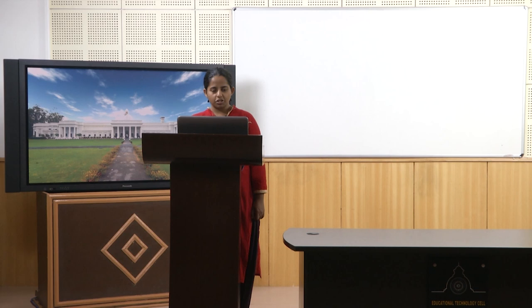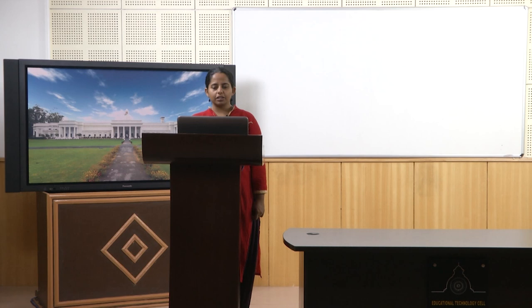How do we go about this? It is interesting and easy to know in theory, but how do we do it in practice? Let us explore the key microbiological methods in bioremediation. On the left panel you have a cell culture — notice colonies of different morphologies, different colors, and different sizes. The bigger ones are perhaps faster-growing colonies, the smaller ones are slow-growing, and the different colors hint at different kinds of microbes, different species and strains growing on this plate.